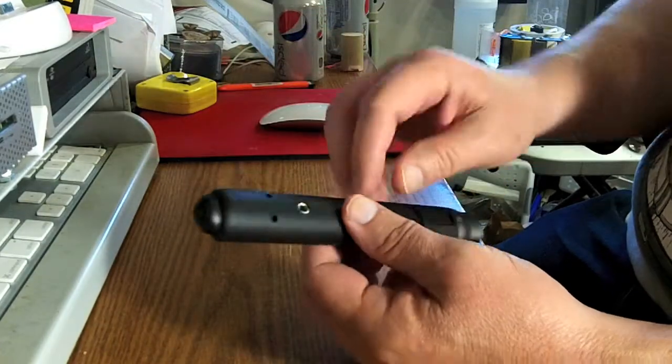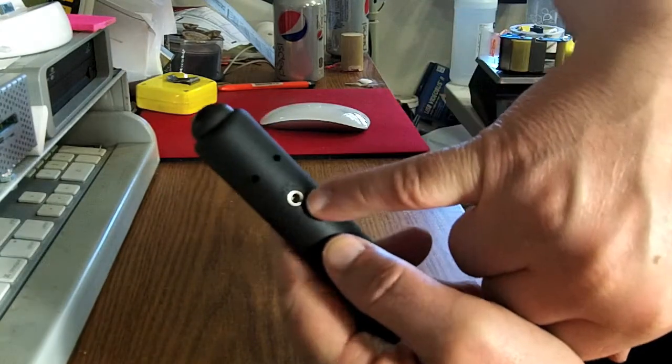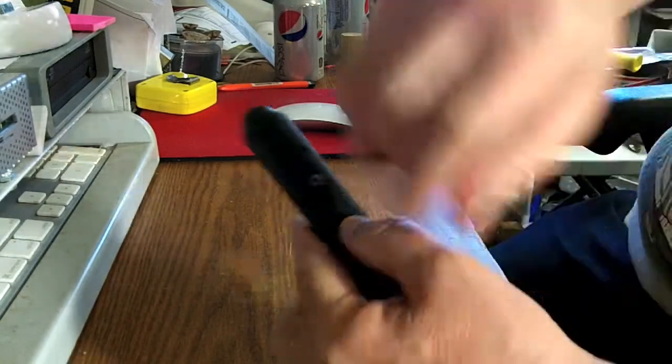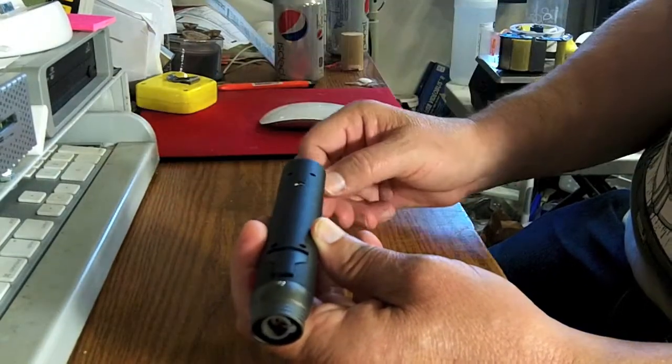This one does not come with fuel in it, so you have to use a can of butane. Right there is the filling spout. You just hold it level like this, put the bottle on and fill it until gas comes out.